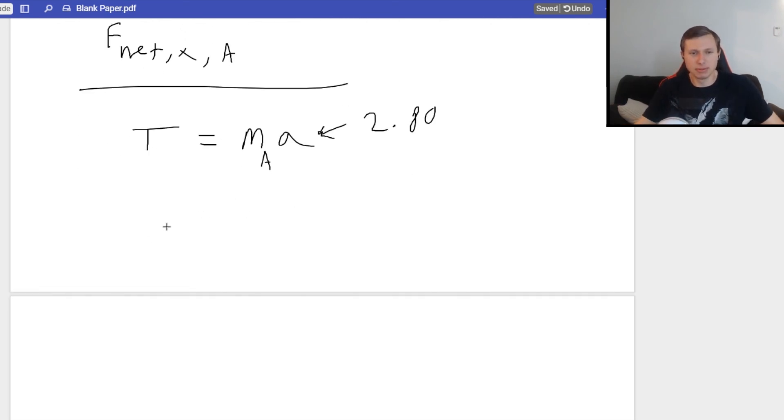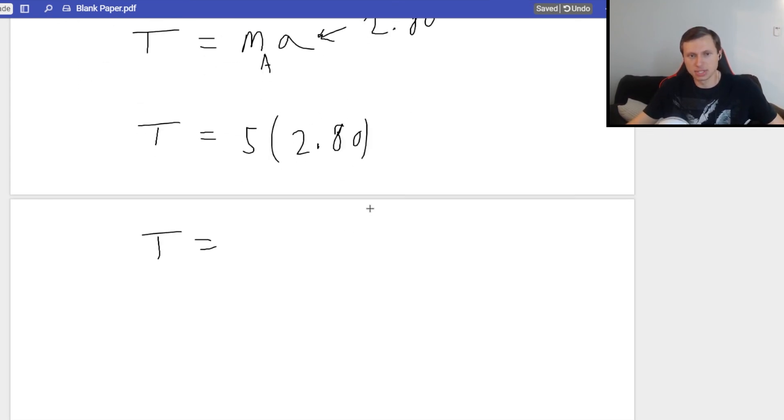Easier said than done. So, if you're not good at Pulley problems, I'm going to tell you to practice, because that's the only way you're going to get better. So tension equals mass A, which is 5, times A, which is 2.80. I plug that in a calculator. I'm going to get tension equals 14, I think. Let me confirm. I like mental math. Yeah, it's 14. Cool. So the units are newtons for tension, and that's the answer to our question right here.